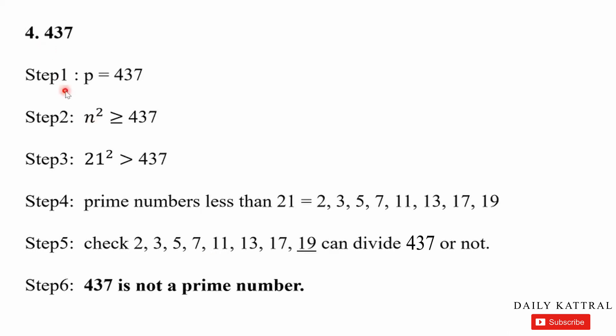Fourth example: 437. Step 1, P equals 437. Step 2: check the condition. Consider 21 squared — 20 squared is 400 and 21 squared is 441, which is greater than 437. So the prime numbers to check are: 2, 3, 5, 7, 11, 13, 17, and 19. Check if any of these exactly divide 437.